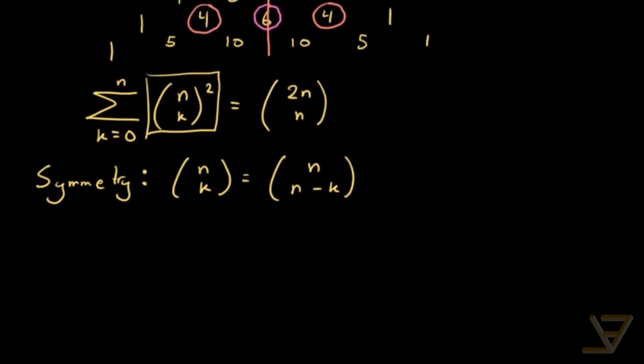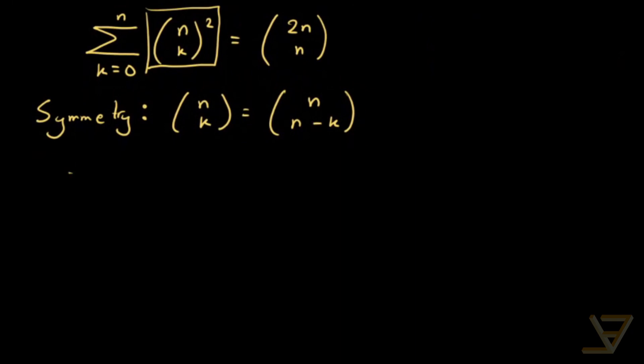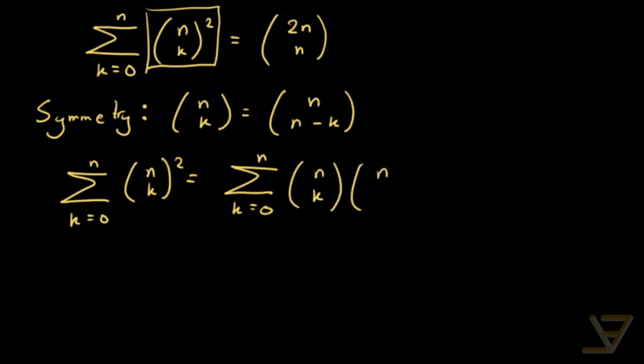So what we get is that the sum of k equals 0 through n of n choose k squared is equal to the sum of k equals 0 through n of n choose k times n choose n minus k. And what we want to prove is that this is equal to 2n choose n.